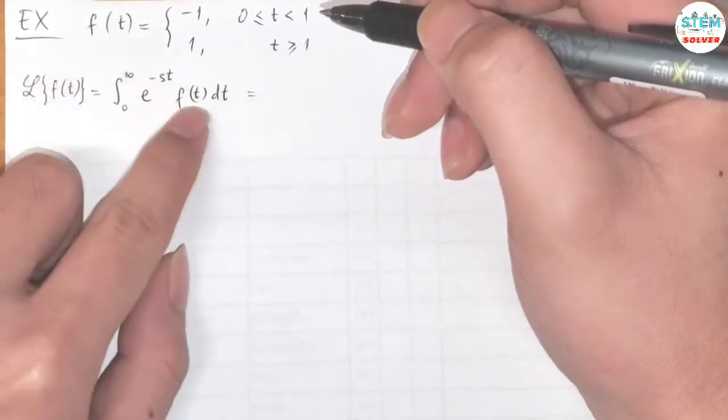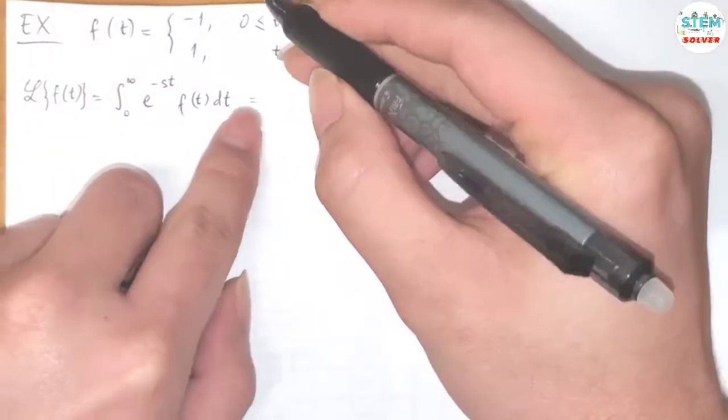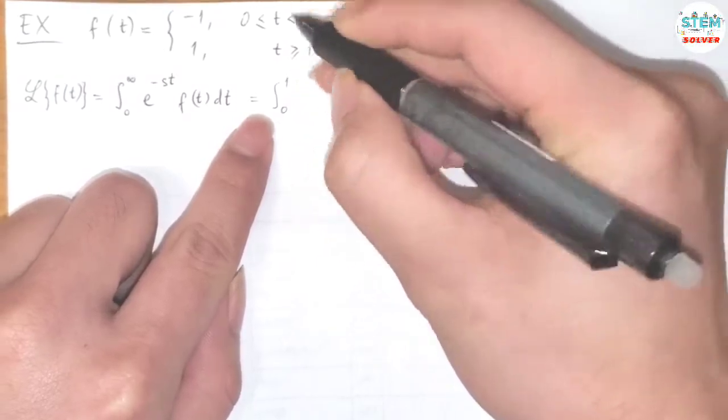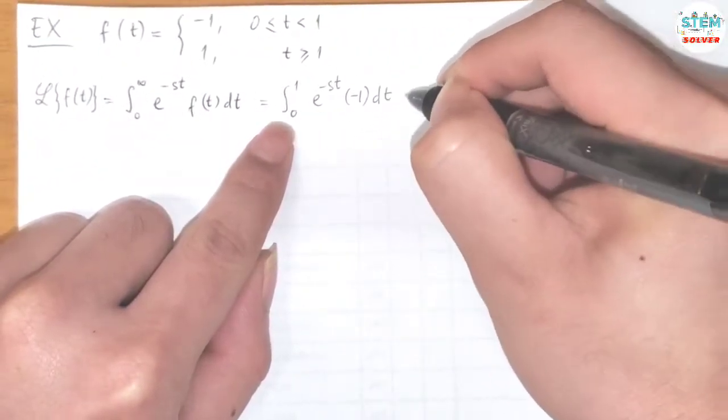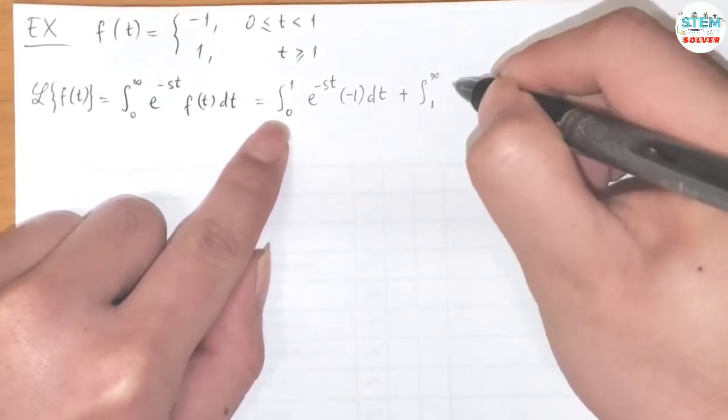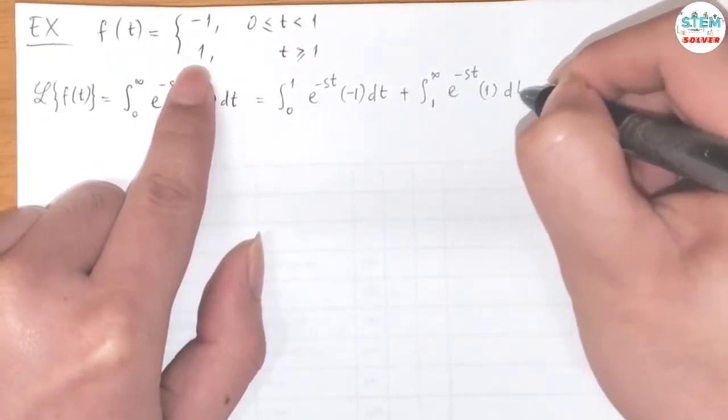So whatever f is, you plug it into this one. So we have the integral from 0 to 1 of e to the negative st times negative 1 dt plus the integral from 1 to infinity e to the negative st times 1 dt.